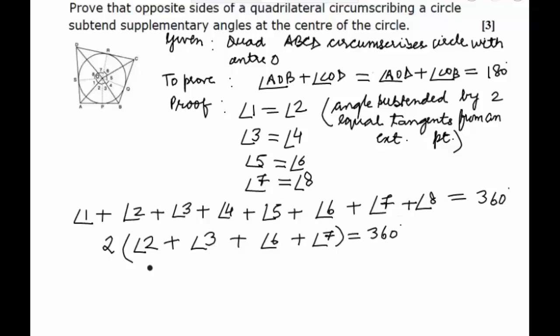Thus we can say that angle 2 plus angle 3 plus angle 6 plus angle 7 is equal to 180 degrees.